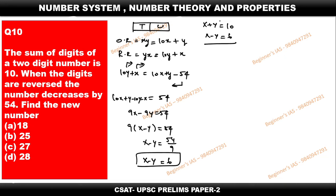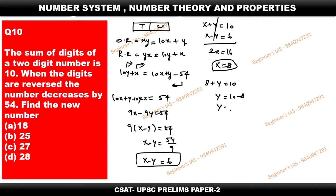By doing elimination, cancelling Y, we get 2X equals 16, so X equals 8. To find Y, substitute X into the equation X plus Y equals 10: 8 plus Y equals 10, so Y equals 10 minus 8, which gives Y equals 2. The original number XY is therefore 82.